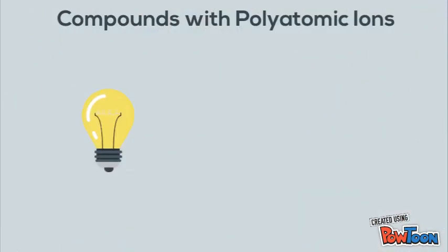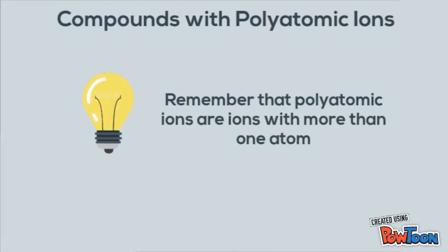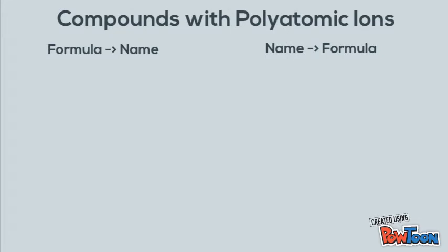Before we get started, just remember that polyatomic ions are ions with more than one atom. Like binary compounds, there are two ways to go about this: I can give you the formula and ask for the name, or I can give you the name of the compound and ask you for the formula. For this one, we're going to start out with the formula and ask for the name.